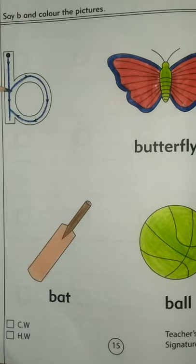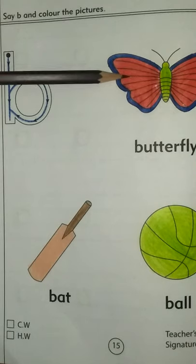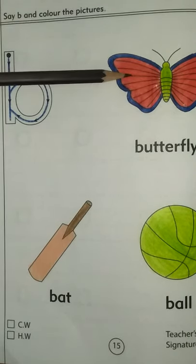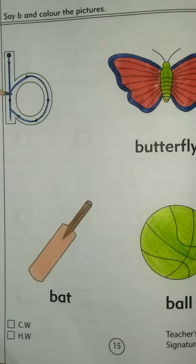Now repeat after me. B is for butterfly. Again repeat after me. B is for butterfly. Very good.